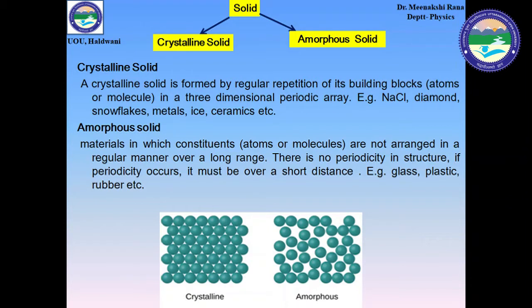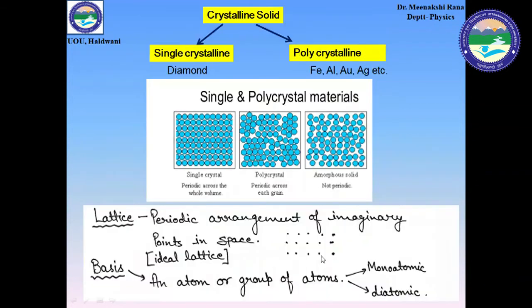In amorphous solids, the constituents such as atoms or molecules are not arranged in a regular manner over a long range and there is no periodicity in the structure. The examples of amorphous solids are glass, plastic, rubbers, etc. Here figures are shown for the crystalline solid with periodic arrangement and the amorphous solid with no periodic arrangement of atoms or molecules.